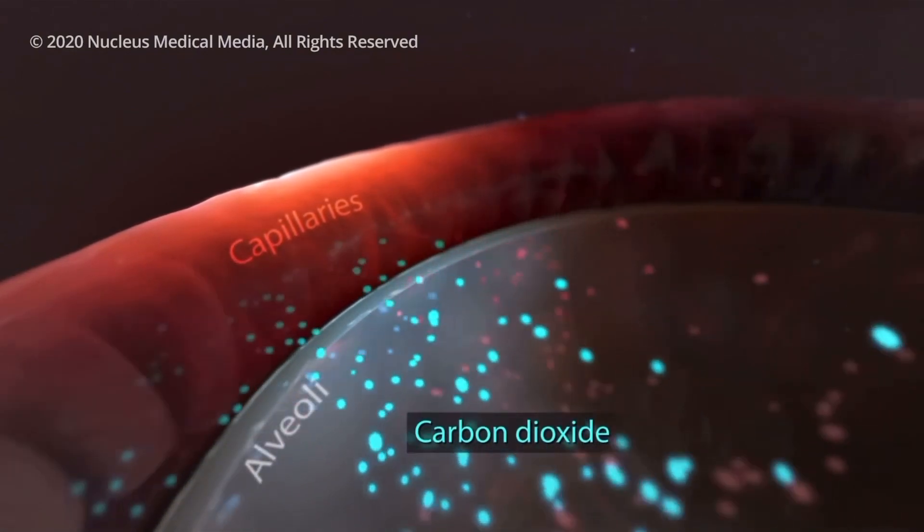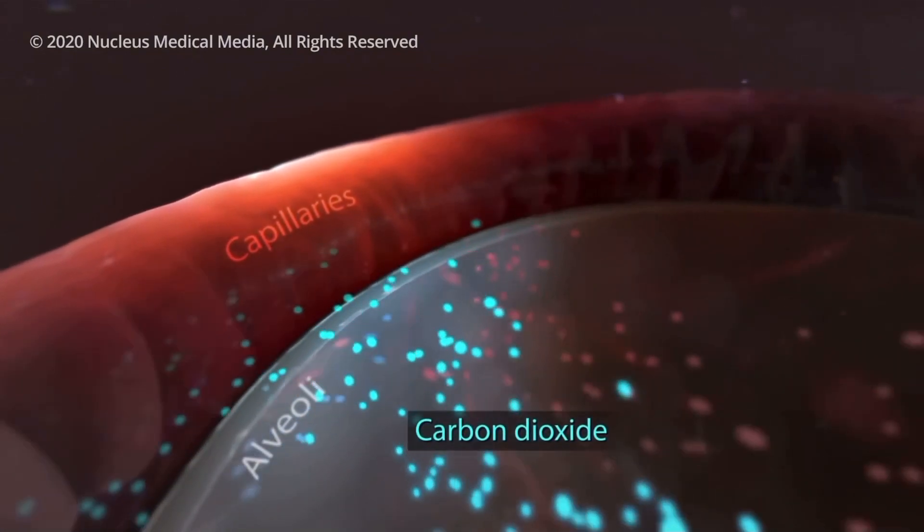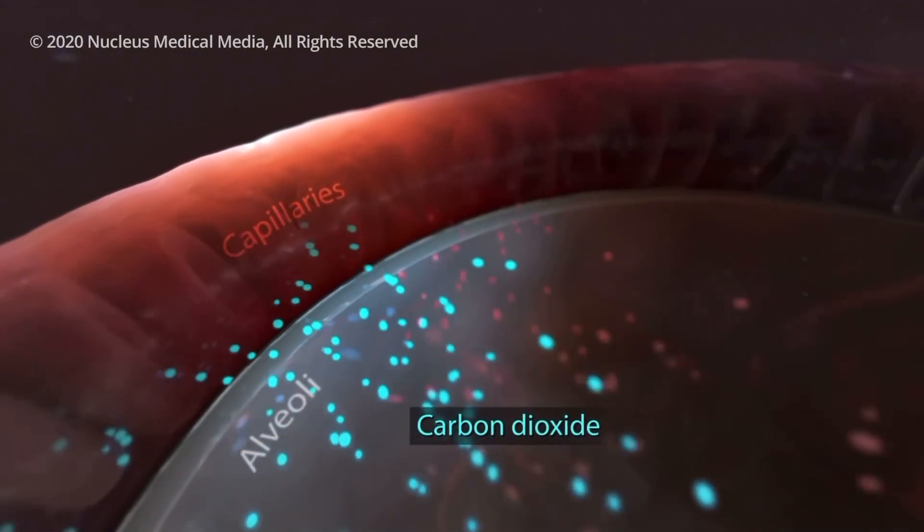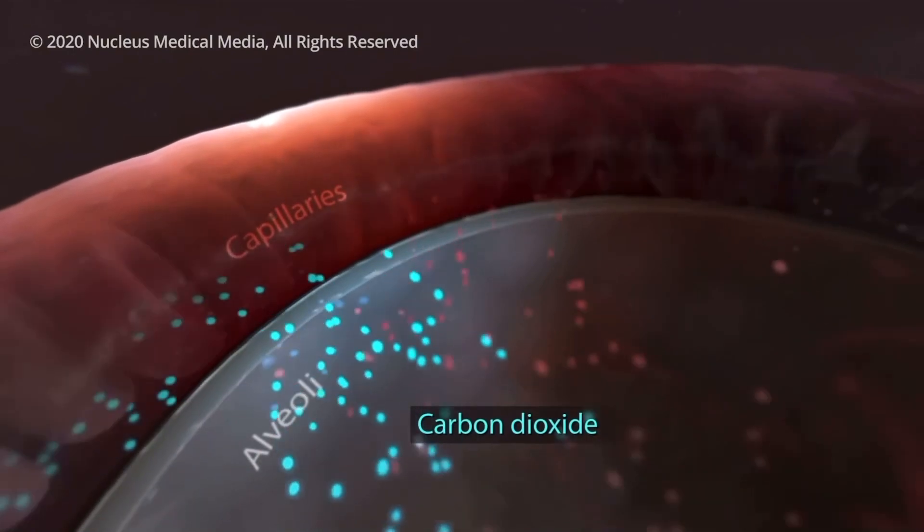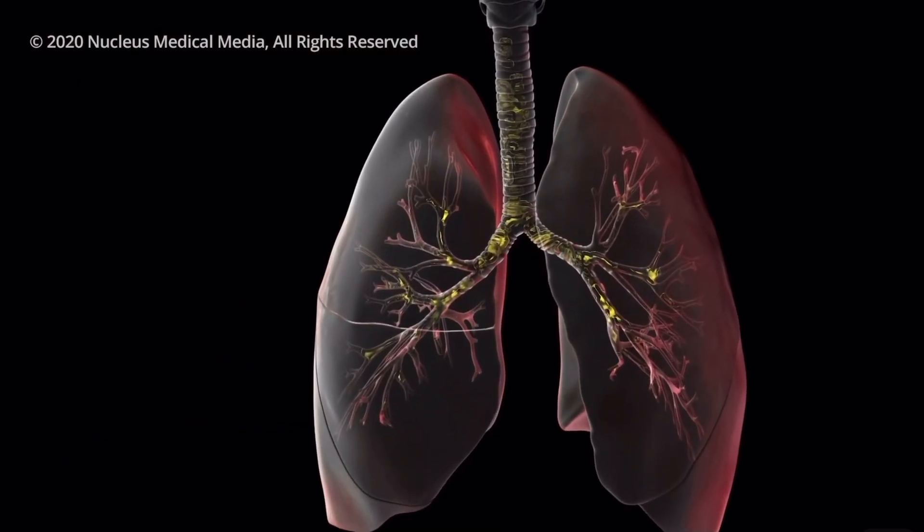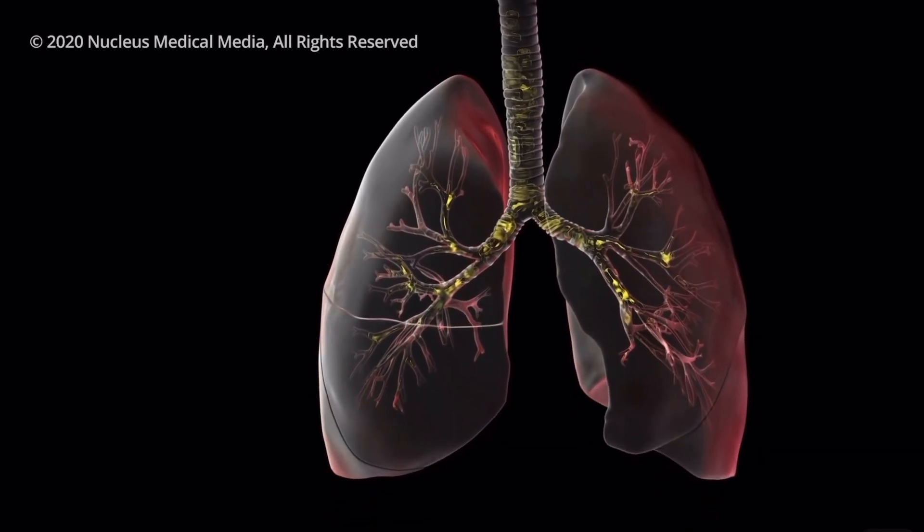Like a tree, each main stem bronchi branch into smaller and smaller bronchi. Bronchioles are the smallest branches.